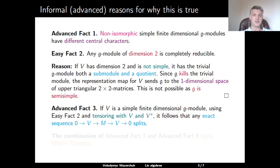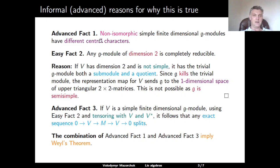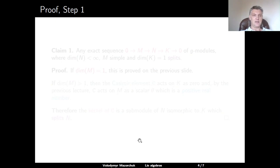Now, using easy fact 2, one can show that if V is a simple finite-dimensional G-module, then any short exact sequence where V appears both as a sub-module and a quotient splits. Easy fact 2 makes this claim for the trivial module V, and using tensoring with V and its dual, one can show that the same claim holds for any simple finite-dimensional G-module. So combining fact 1, which says that you cannot glue together non-isomorphic simple modules, and fact 3, which says that you cannot glue together a simple module with itself, it follows that any finite-dimensional G-module is semi-simple, which is exactly the statement of Weyl's theorem.